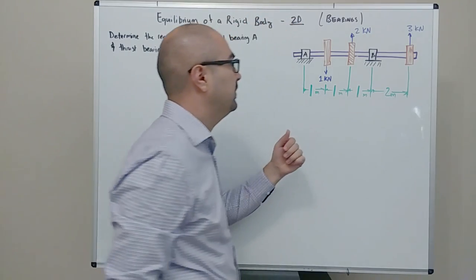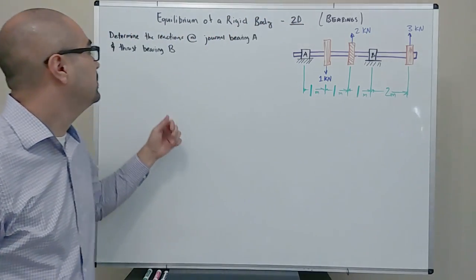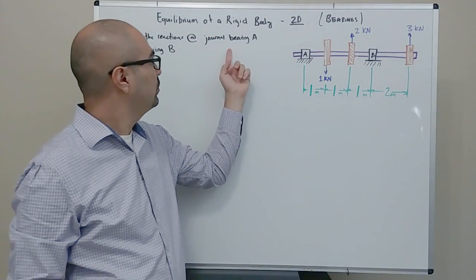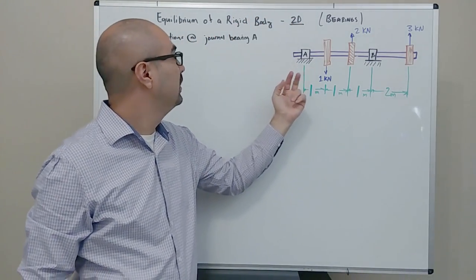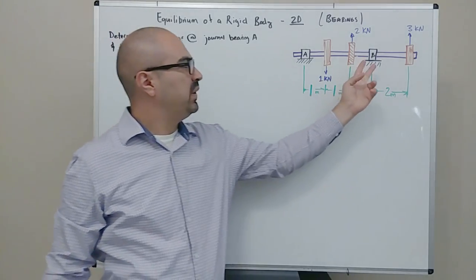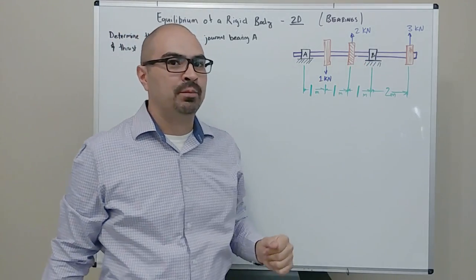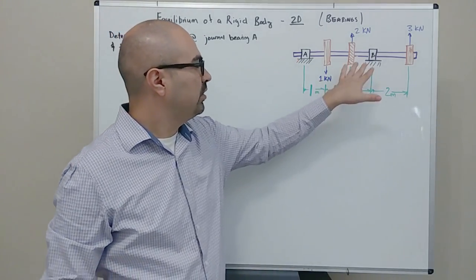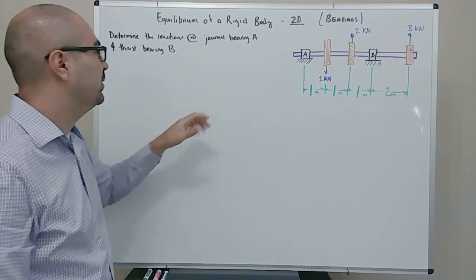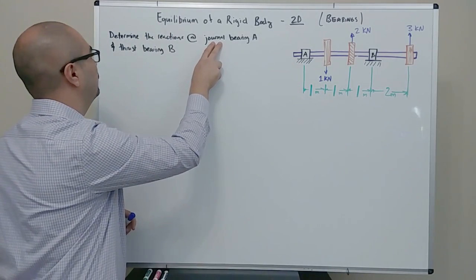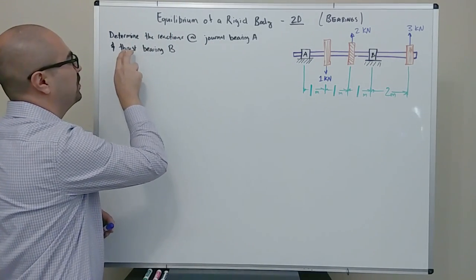Our job for today is going to be to determine the reactions at the journal bearing A and the thrust bearing B. Notice that A and B are both bearings, but they have different names — one is a journal and one is thrust.